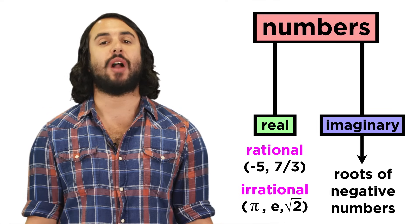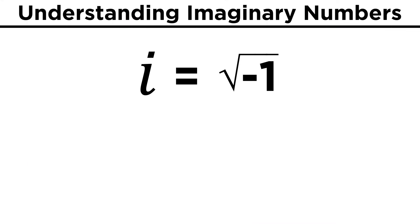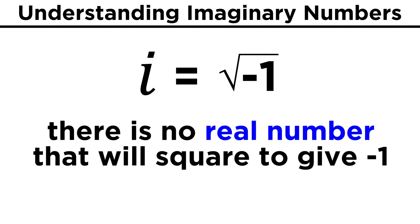These are the ones we get when we try to take the square root of a negative number. The simplest imaginary number is i, in lowercase italics, and it is equal to the square root of negative one. We need this number because there is no real number that when squared gives negative one, and that's why i is imaginary.